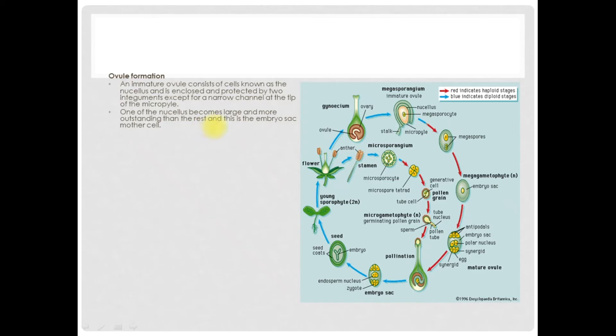One of the nucellus becomes large and more outstanding than the rest, and this is the embryo sac mother cell. Here we have this cell that is known as the embryo sac mother cell that has become large. It used to be part of the nucellus but is enlarged.